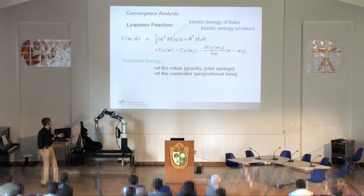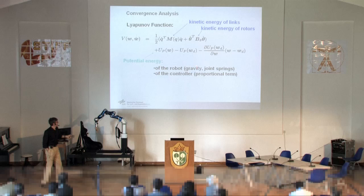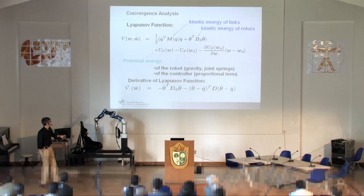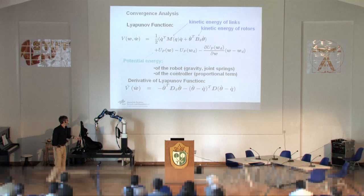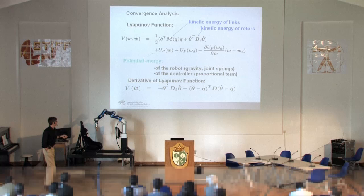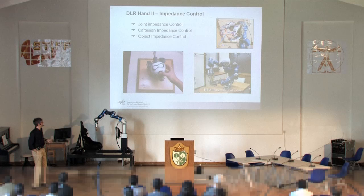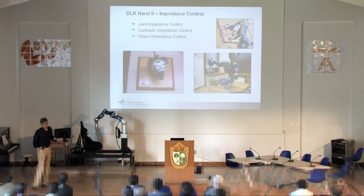If you define Lyapunov functions putting all the energy terms together — kinetic energy of the link side, of the motor side, potential energy of the robot gravity, of the joint springs, and of the controller — then the derivative will contain all dissipative terms of the controllers and of the system. At least you will have stability, and if the potentials are designed properly, you might also have asymptotic convergence. Using this concept in the following years, with Christian Ott and Thomas Wimbock, we extended this gradually to more and more complex systems.